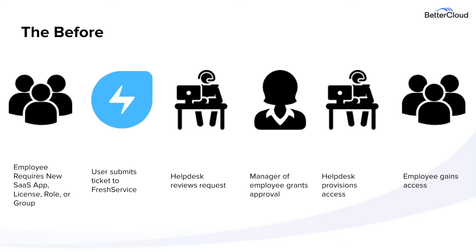Typically when people request SaaS or any of these apps or permissions, they will raise a ticket in your ticketing system — in this case, FreshService. Somebody in your help desk team would then review that request. Maybe the manager goes and approves those requests for that particular employee, and then the help desk provisions the access after getting manager approval. And then essentially the employee is in. This is a very common flow.